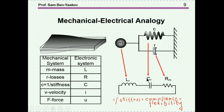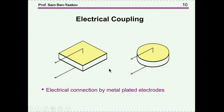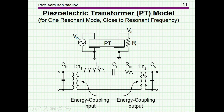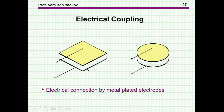This is for one mode of operation — there are many modes, and each mode has its own network to represent it. In the usual way we plate the piezoelectric element with metal for the electrodes. The equivalent circuit of the piezoelectric transformer looks in general like this: the mechanical part contains the mass, one-over-stiffness, and damping. This represents the coupling between electrical and mechanical units, and it might have some gain. Here is the input side and this is the output side.